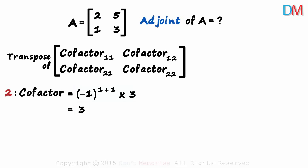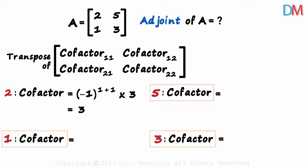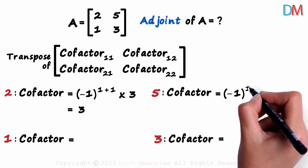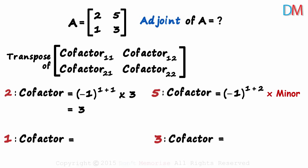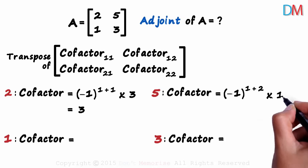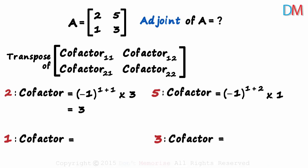Next we find the cofactor of 5. The element 5 lies in the 1,2 position, so we multiply negative 1 raised to 1 plus 2 with its minor. To find the minor of 5, we exclude row 1 and column 2 and find the determinant of what remains — the determinant of 1 is 1. So we multiply this with 1 to get the cofactor. Negative 1 times 1 gives us negative 1, which is the cofactor of 5.